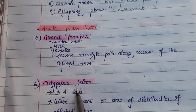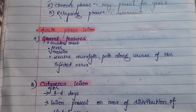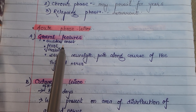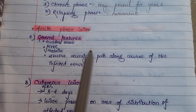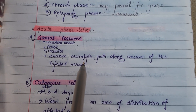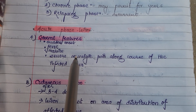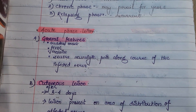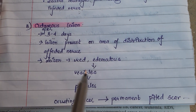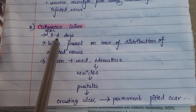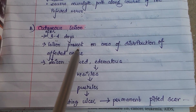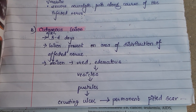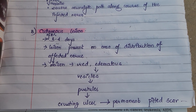In the acute phase, there are general features, cutaneous lesions, ocular lesions, and neurological complications. The general features include sudden onset, fever, malaise, and neuralgic pain along the course of the infected nerve — which is characteristic of the disease as it is specific to the course of the affected nerve. The cutaneous lesions occur only after three to four days of disease onset, and are present on the area of distribution of the affected nerve, such as the skin of the lids and forehead.